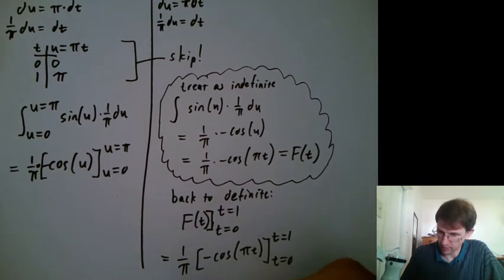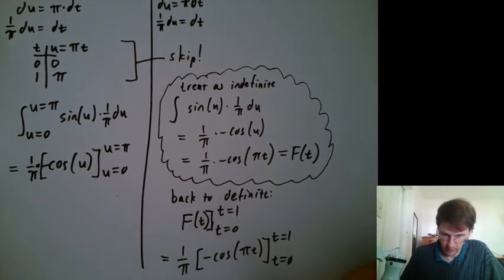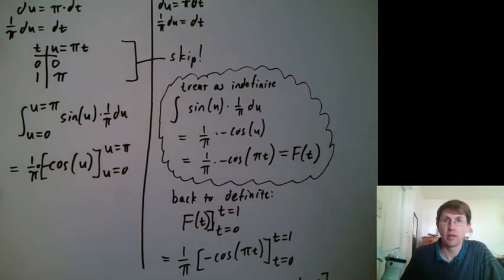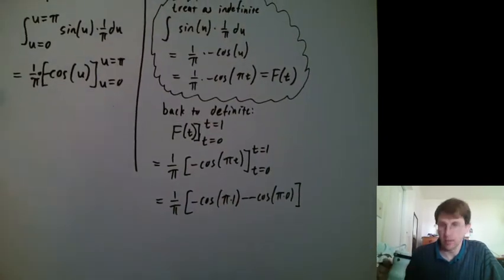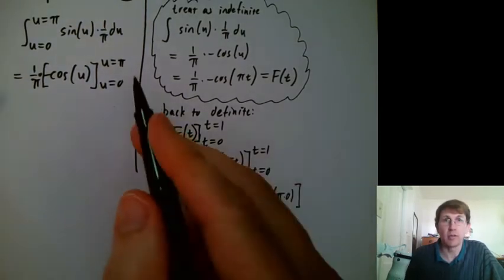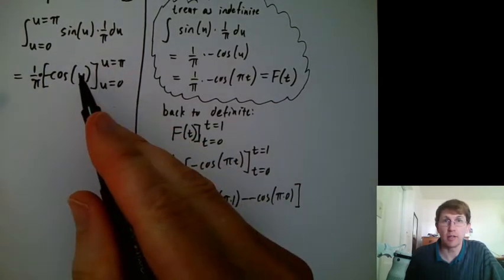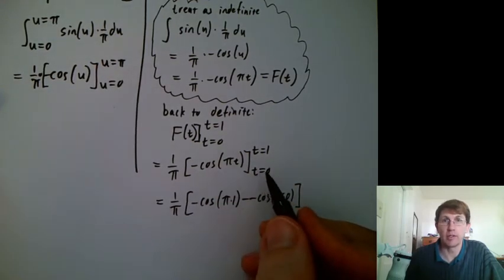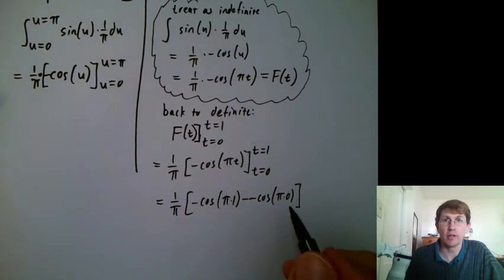When you do that, what are you going to get? So we'll have negative cosine of π times 1 minus minus cosine of π times 0. And π times 1 is what we would have done if we had plugged in u equals π here. And π times 0 is what we would have done if we plugged in u equals 0 here. So in some sense, we're still doing the same work.